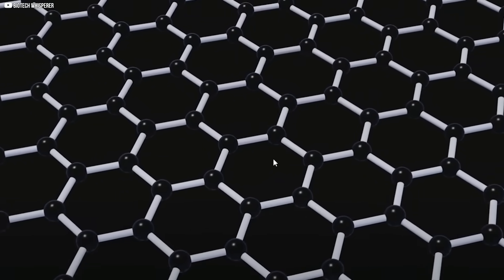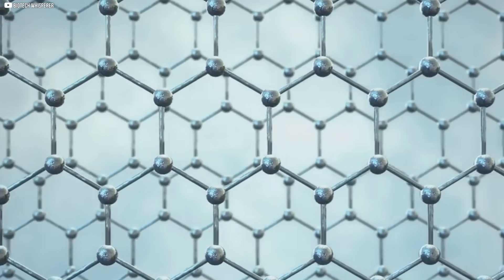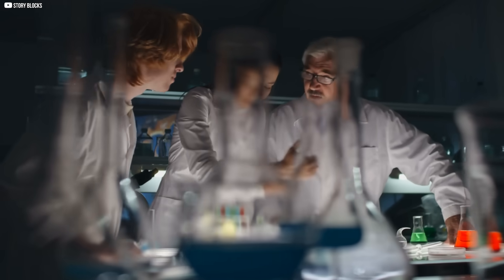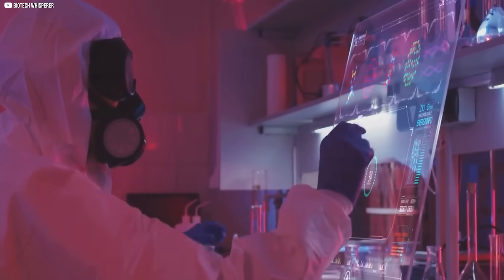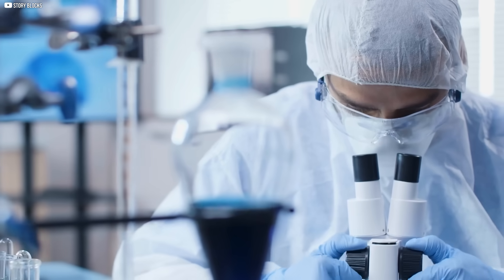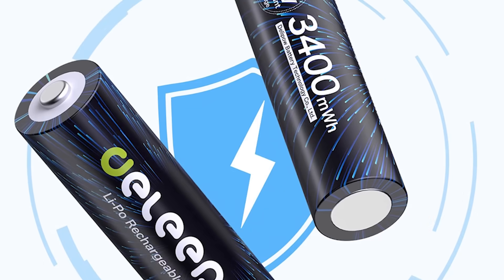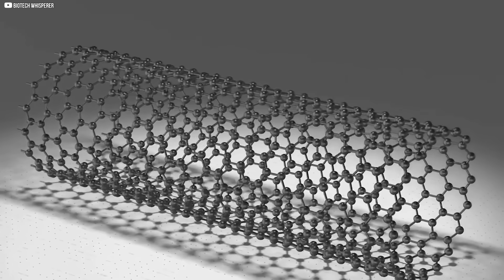High-quality graphene is difficult to scale. Some researchers use lasers to slice it free. Others try bacteria or plant sugars. Each method is clever, but none of them are fast, none of them is cheap, and none produce consistent results. This is the bottleneck. Not the battery's design. A supply chain problem at the atomic level.